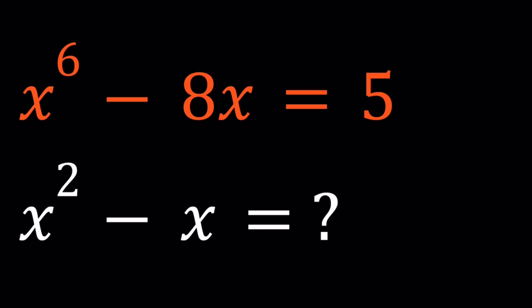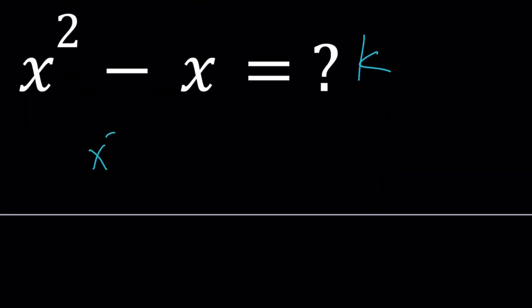I'm going to set this equal to k. By the way, we're supposed to find a numerical value for x^2 - x, not in terms of x or anything like that. So by setting this equal to k, I can write x^2 as x + k. This is going to be my formula for the entire video.